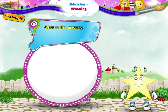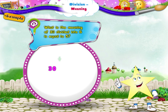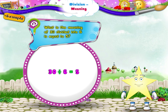What is the meaning of 30 divided by 6 is equal to 5? Yes, it means 30 objects are divided into 6 groups with 5 objects in each group.